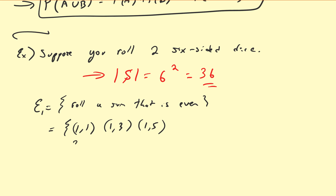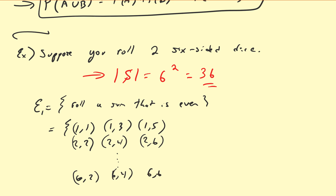Going into row two: 2 plus 2 is even, 2 plus 4 is even, as well as 2 plus 6. Notice that there are going to be three values in each row all the way down to the sixth row — 6-2, 6-4, and 6-6. So the cardinality of E1 is going to be equal to 6 times 3, which is equal to 18.